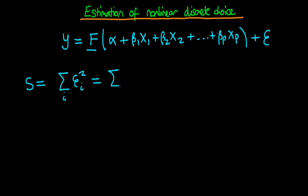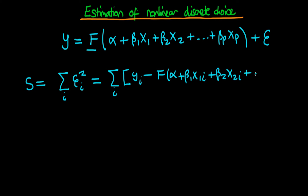Writing out the sum, we would have a bracket: y_i minus capital F of alpha plus beta_1 times x1i — where the i indicates each individual in our sample — plus beta_2 times x2i, all the way through to beta_p times xpi. Then we close the parenthesis and square this entire term. This is not so different from ordinary least squares thus far.